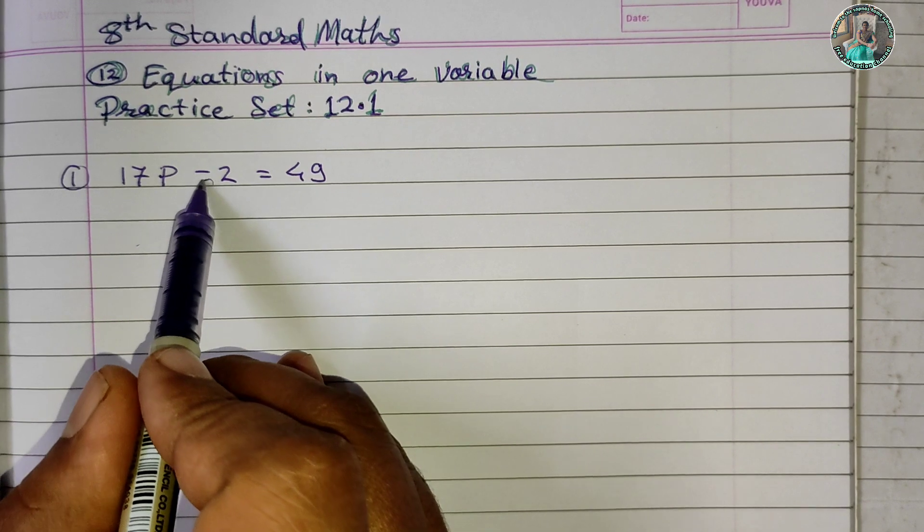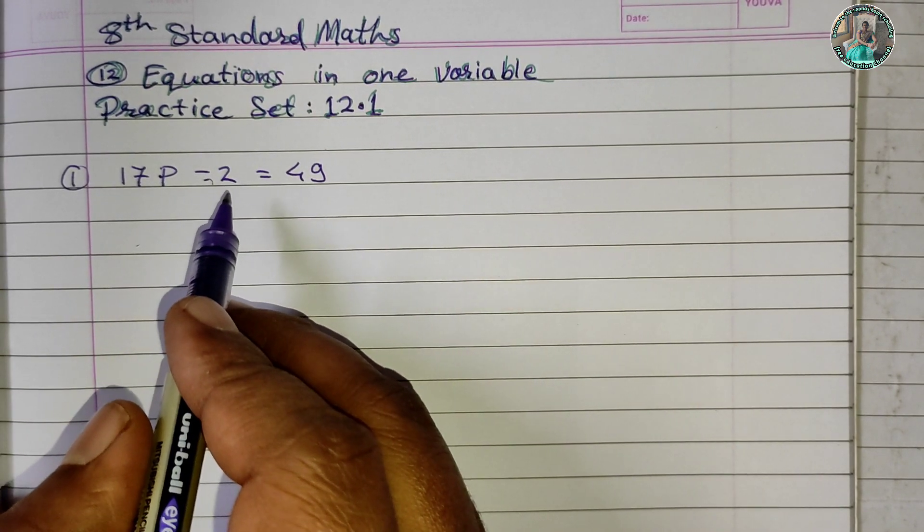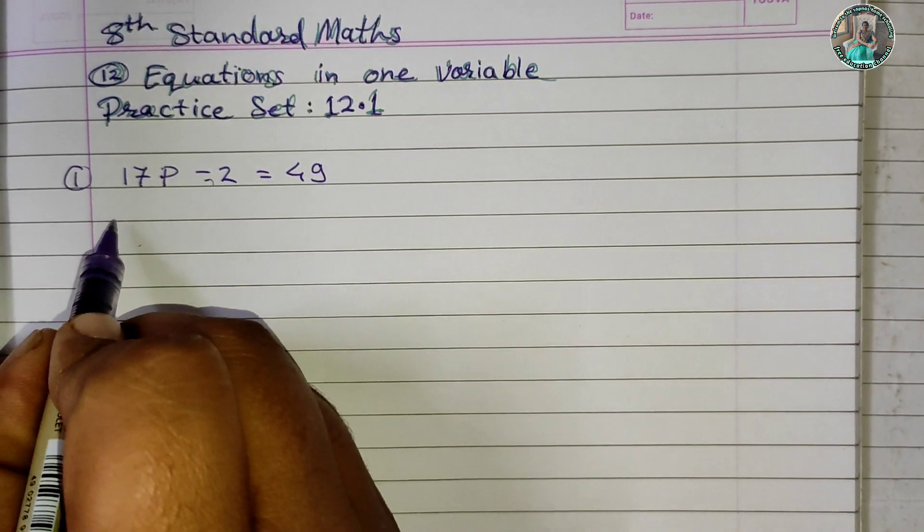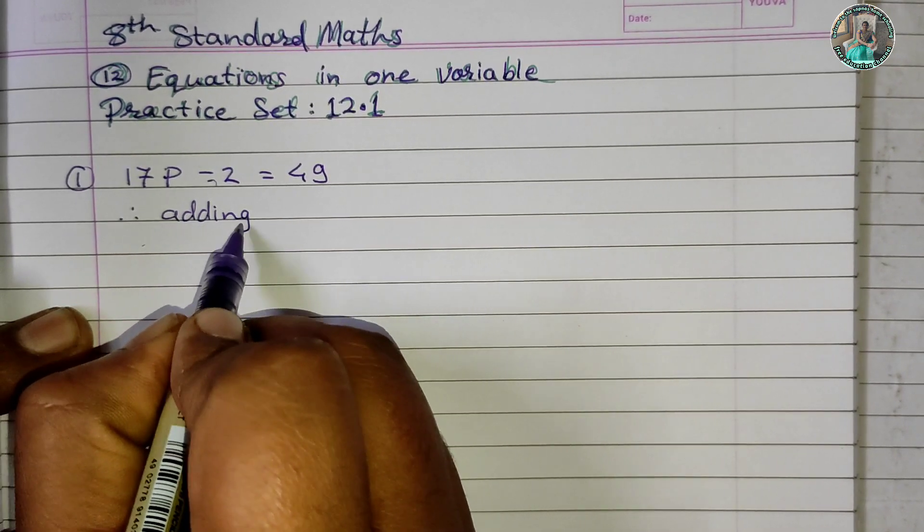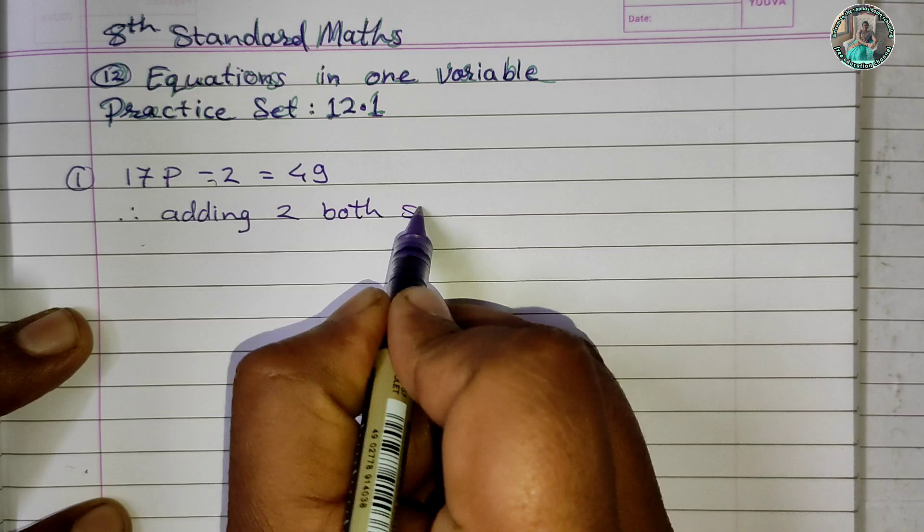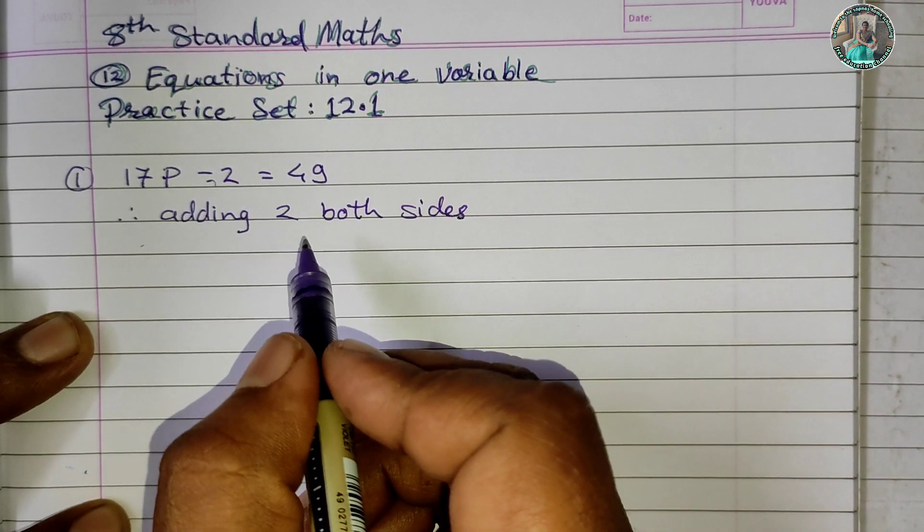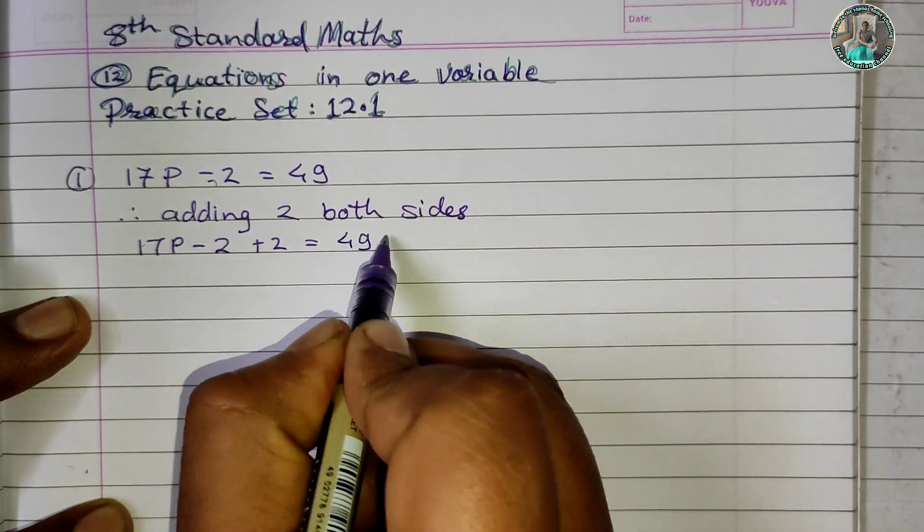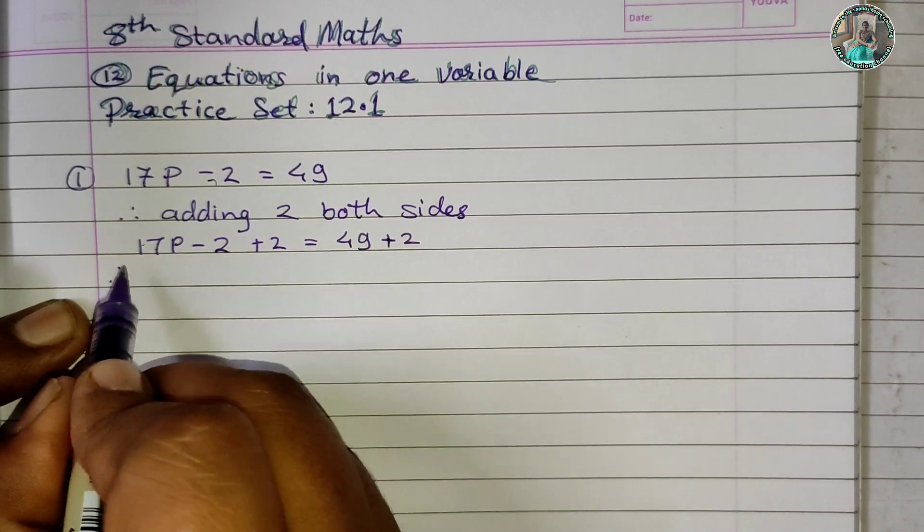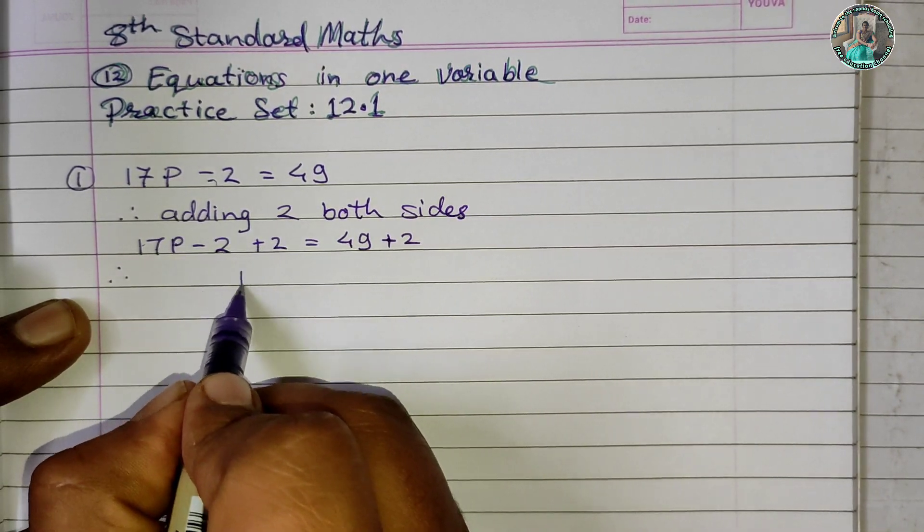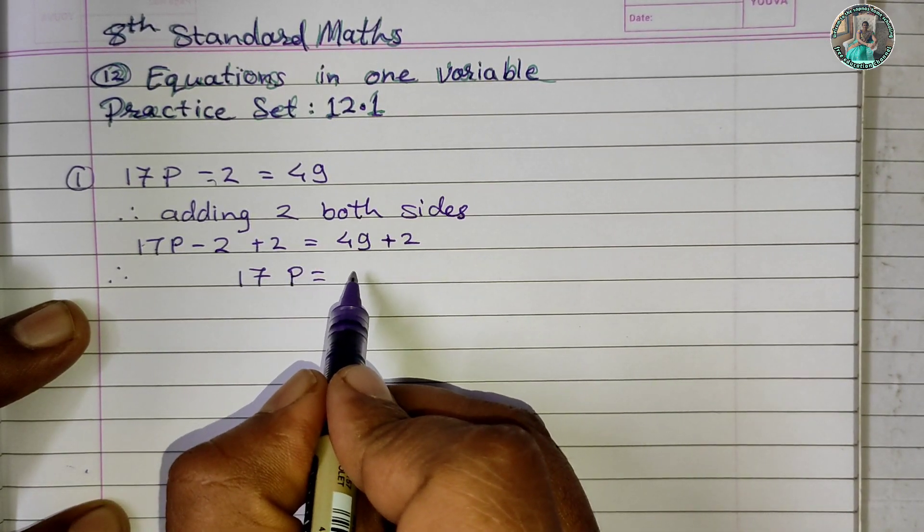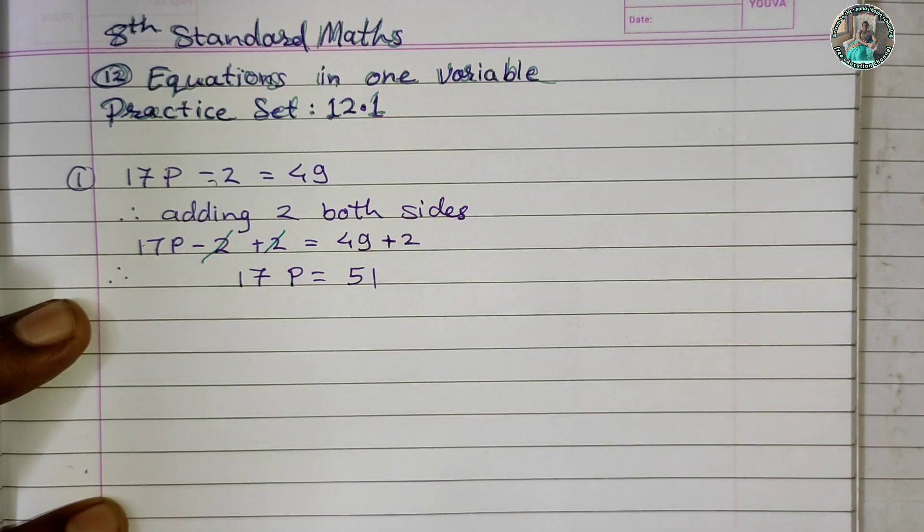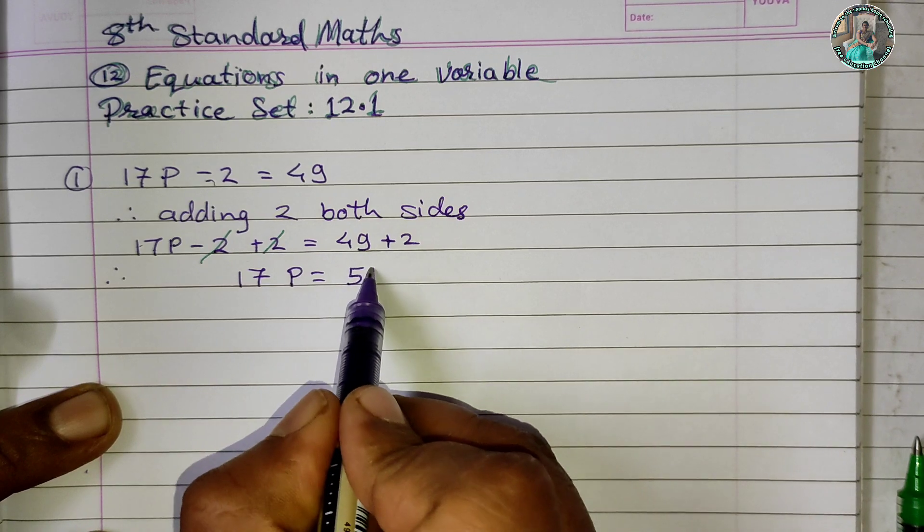We add 2 to both sides. Adding 2 to both sides: 17p - 2 + 2 = 49 + 2. This gives us 17p = 51, since -2 and +2 cancel out on the left.